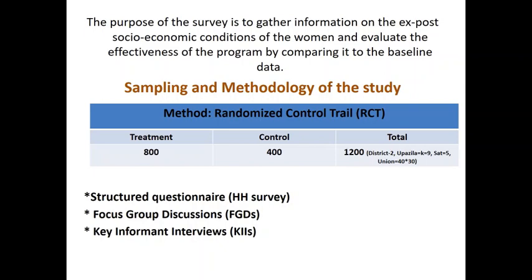In the impact assessment of SHOPNO, there are two groups: a treatment group and a control group. 800 beneficiaries were randomly selected as the treatment group, and another 400 were selected as the control group, giving a total of 1,200 beneficiaries.